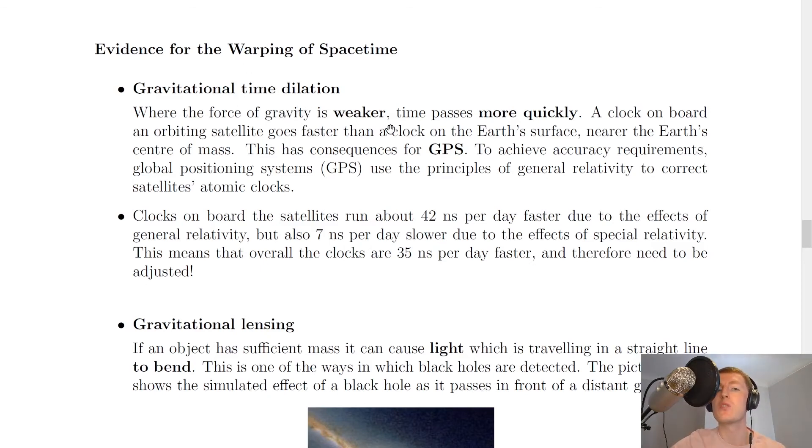Where the force of gravity is weaker, time passes more quickly. But the opposite is also true. So where the force of gravity is stronger, time passes less quickly or slower. So because of this first statement, a clock on board an orbiting satellite goes faster than a clock on the Earth's surface, nearer the Earth's centre of mass. This has consequences for GPS.